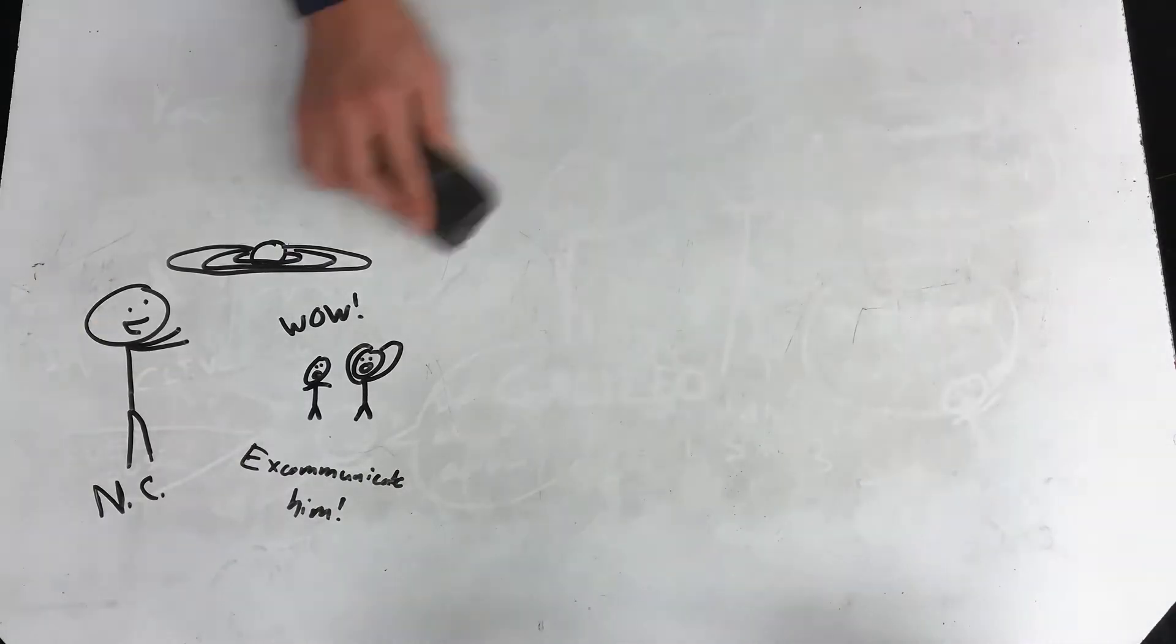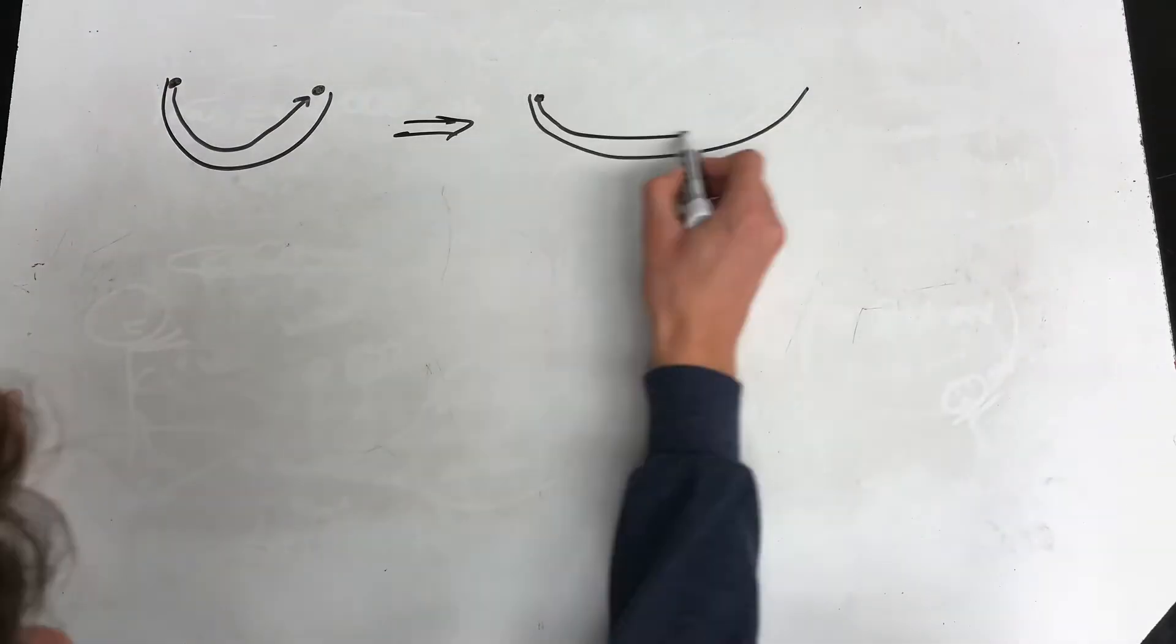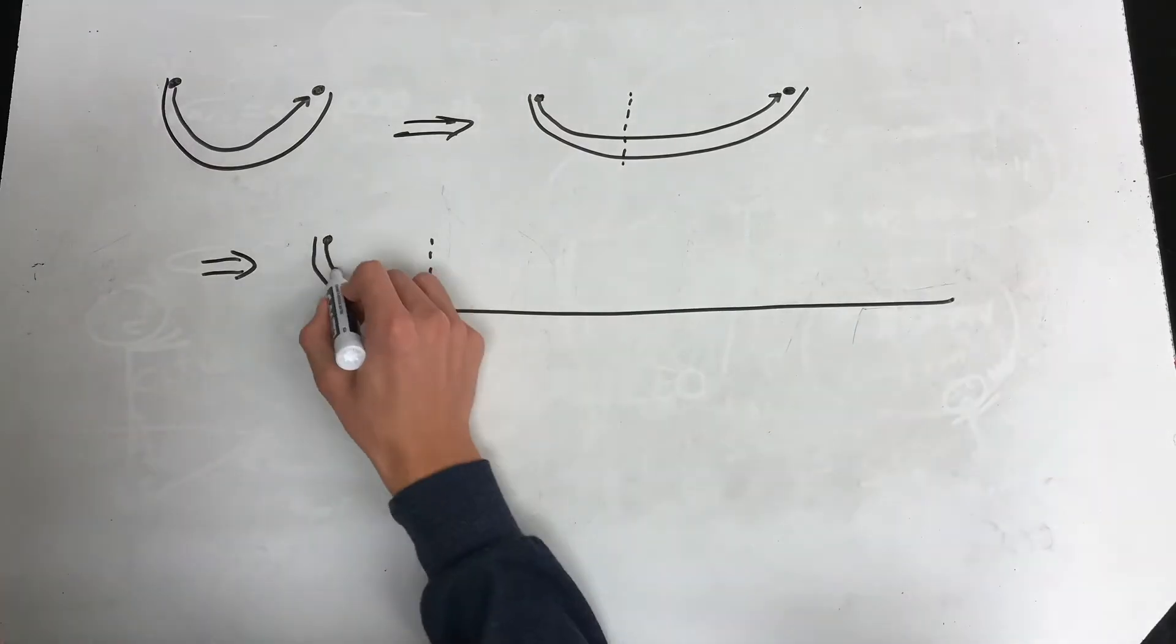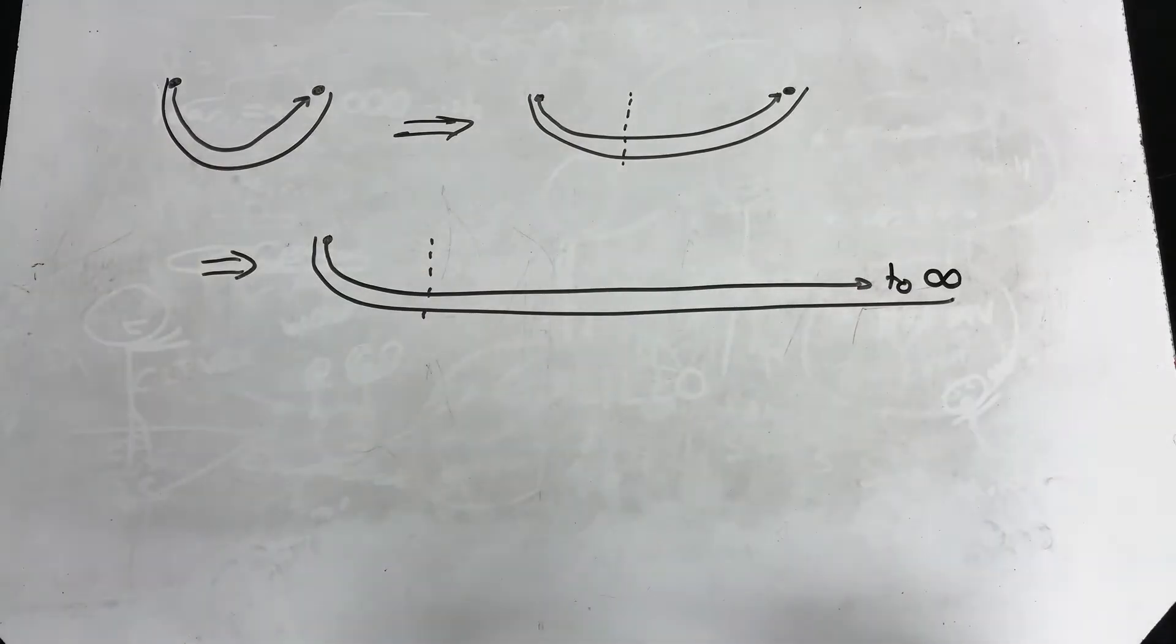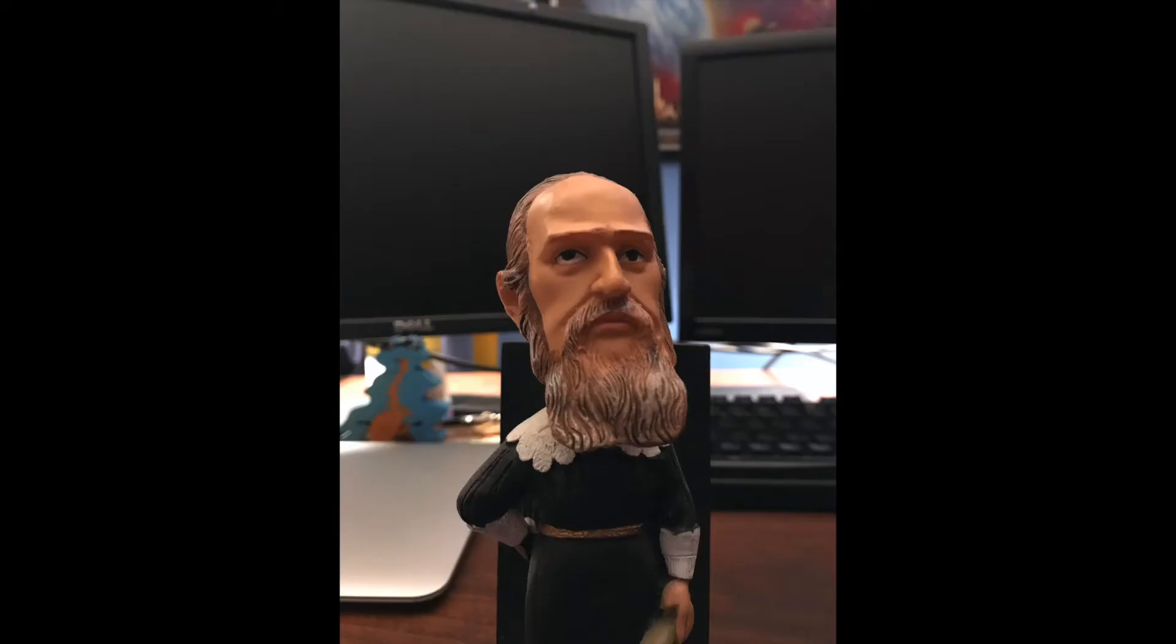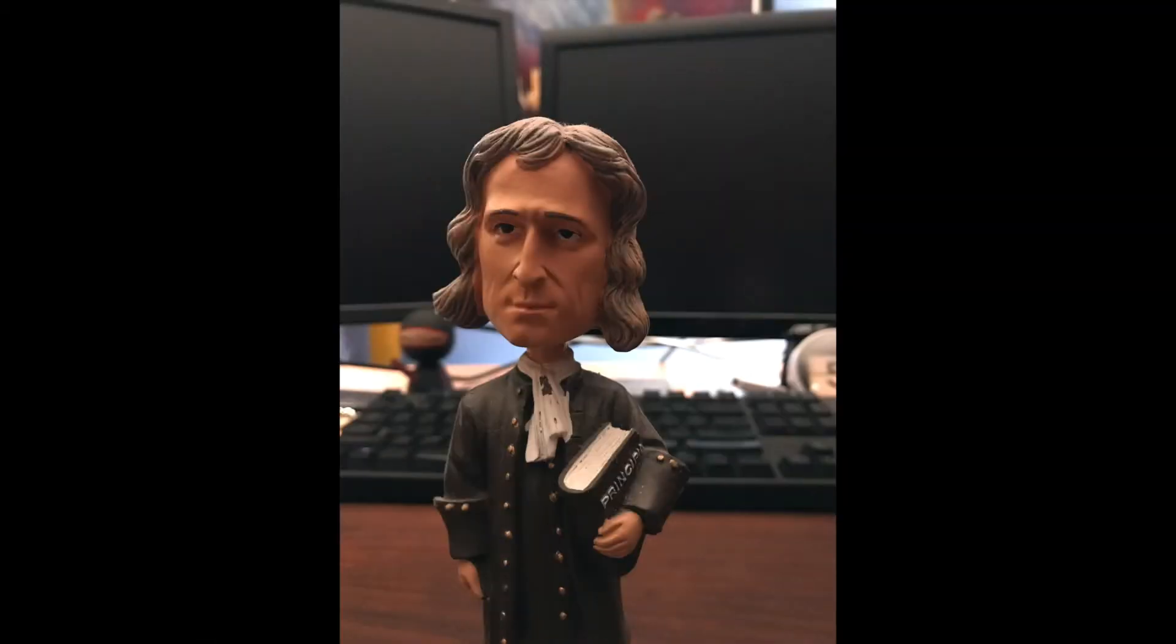Galileo said, if I let a ball roll into a bowl, it will always climb back to the top on the other side. If I make the bowl longer, this still happens. So if I make the bowl infinitely long, the ball will just keep rolling. Boom, Aristotle. Impetus has been defeated. Objects tend to stay at a constant velocity unless a force acts upon them, a fact Newton eventually restated in his first law of motion.